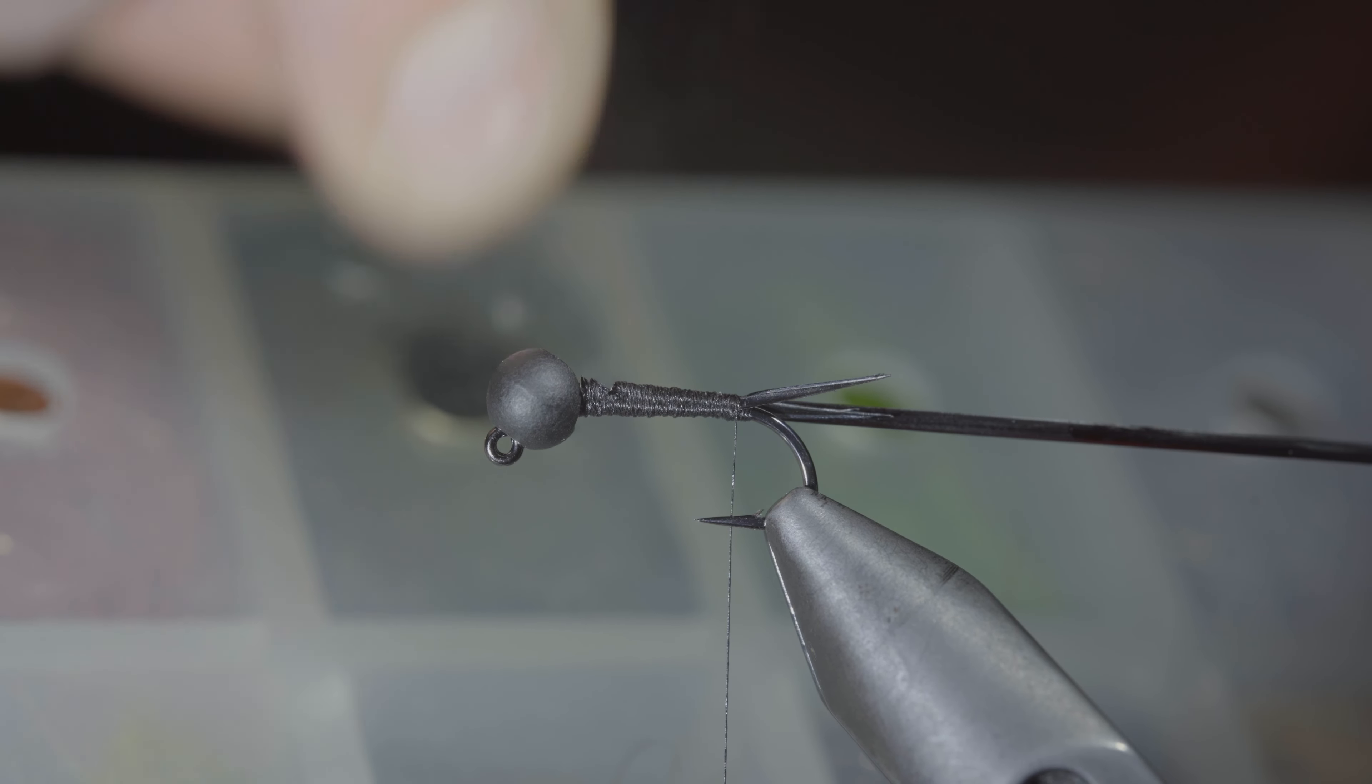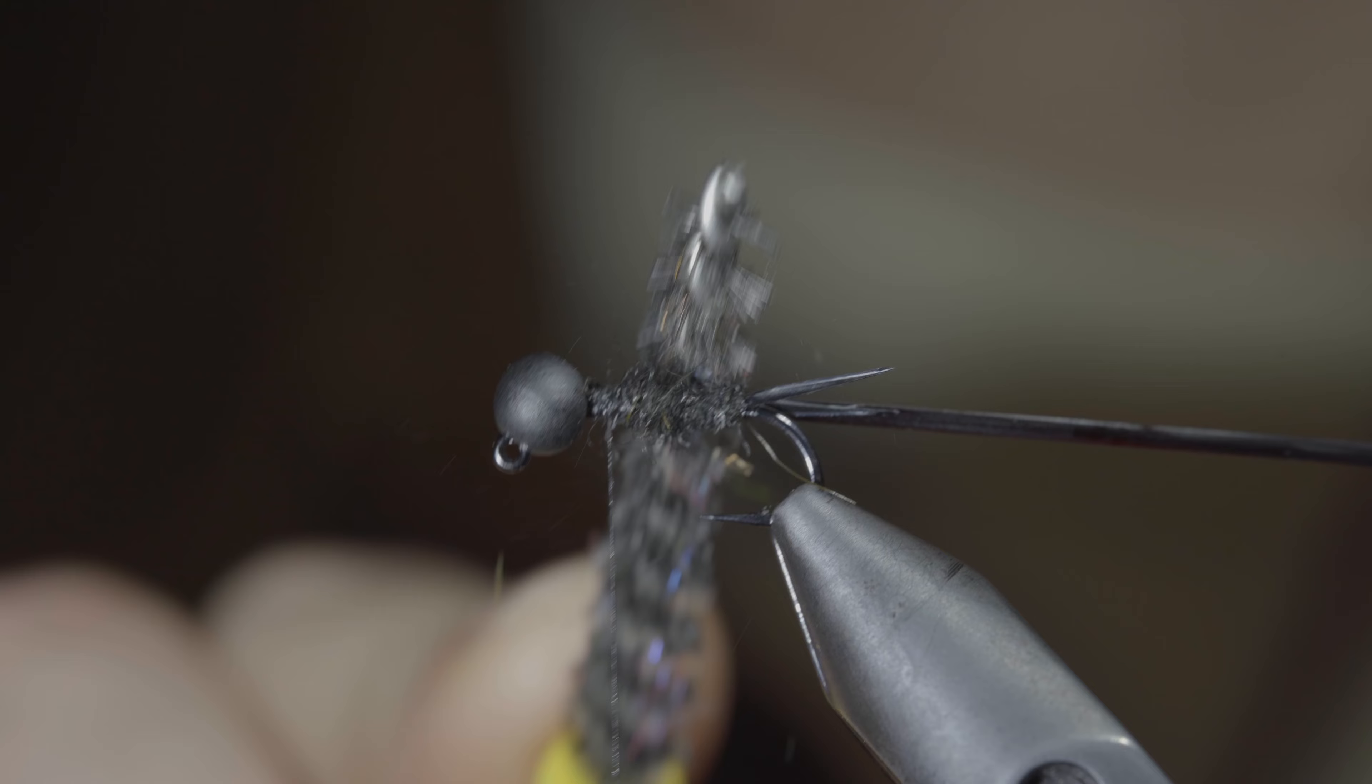We'll then wrap towards the back of the fly and grab some black hare's ear. Create a dubbing noodle and wrap this forward in close touching spirals, continuing our transition up towards the bead. Continue to add or tighten the dubbing as needed.